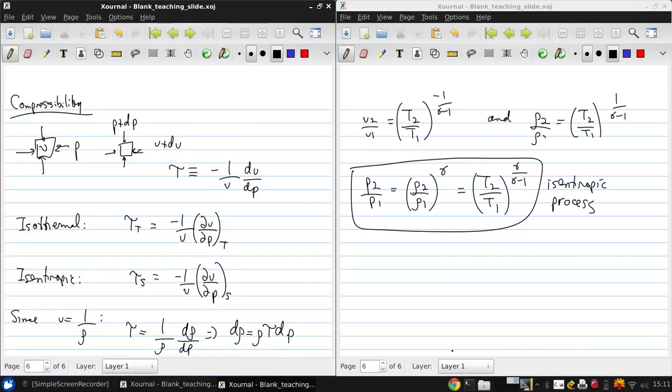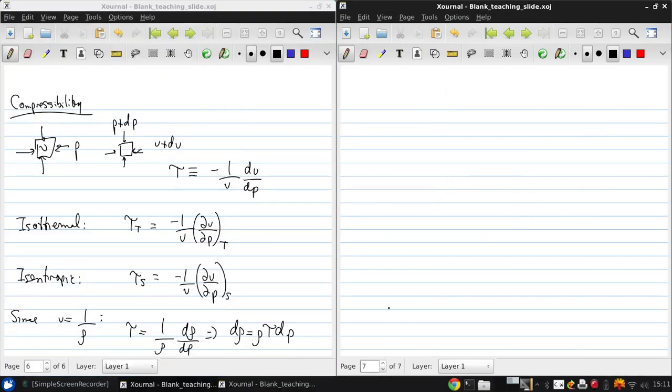However, even for gases, if the flow is slow enough in some sense, then the changes in pressure with respect to the base level of pressure are much smaller than 1. And so the changes in density are much smaller than 1. And this is how we arrive at the term of incompressible flow, even if we're dealing with a compressible fluid like air.